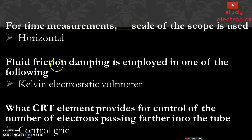Next, fluid friction damping is employed in Kelvin electrostatic voltmeter. Next, what CRT element provides for control of the number of electrons passing further into the tube? Control grid. Control of the number of electrons is provided by the control grid.